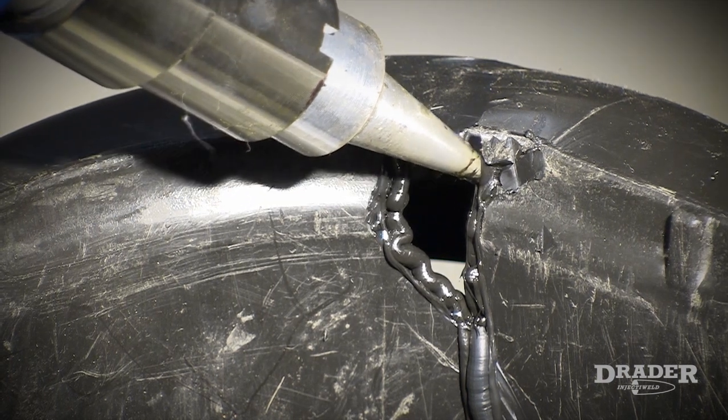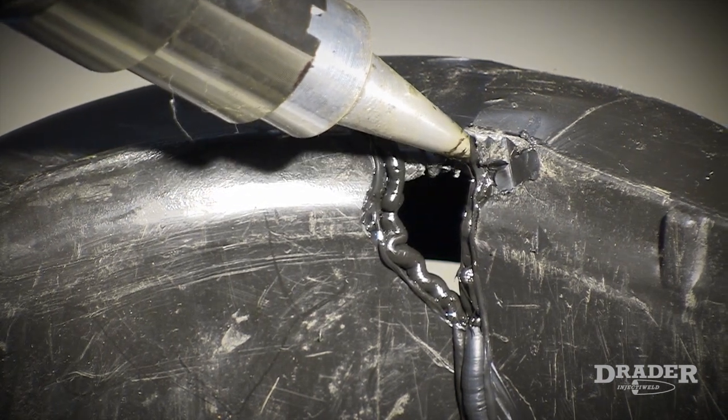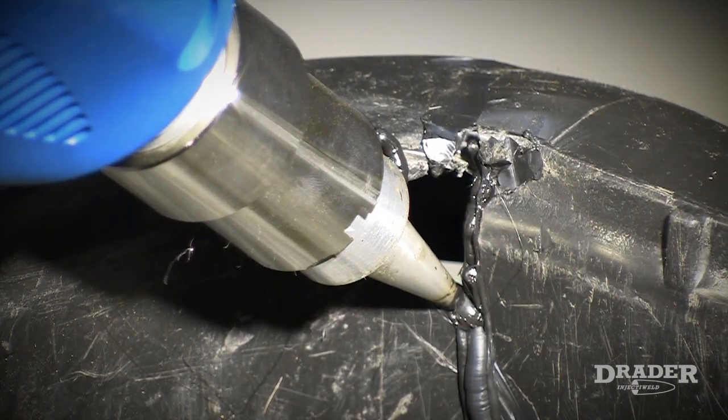The molten welding rod comes out of the injector weld with enough pressure to ensure that there is good mixing between parent material and welding rod.